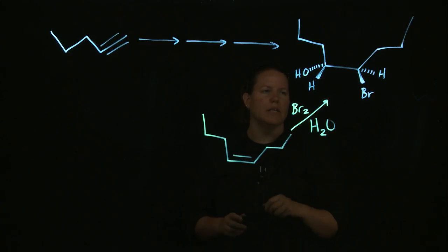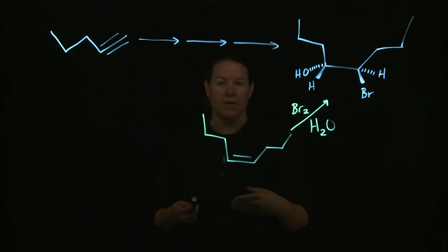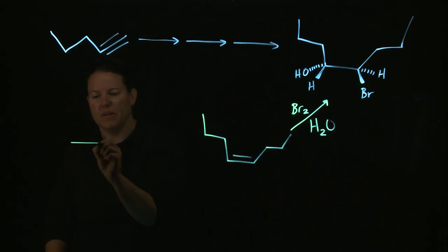The way I know how to make a cis alkene is from a triple bond, right? So a triple bond would allow me to make a cis alkene. That's pretty much the only way we've done that.